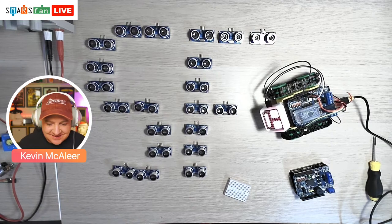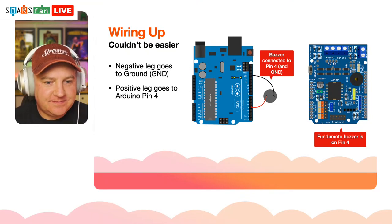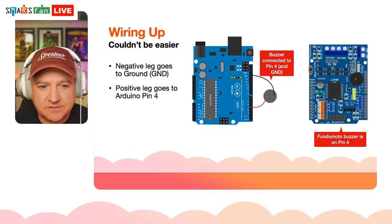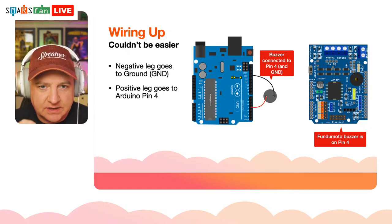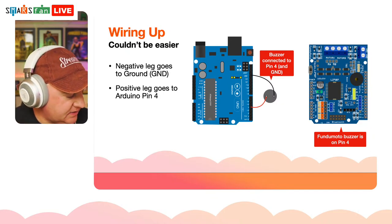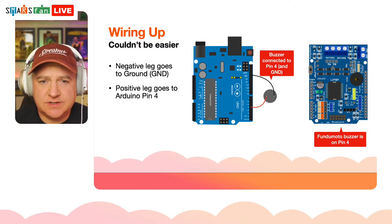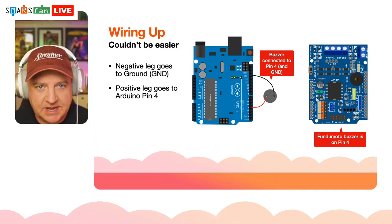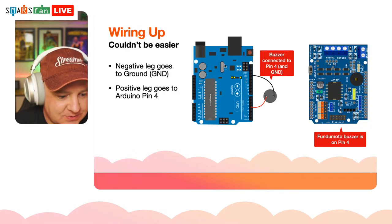Like I said, it couldn't be easier — pin 4. You can actually use any pin, but if you're doing more sophisticated stuff you may need the PWM pins, which are the ones with the little squiggle on the Arduino next to them — pins 3, 5, 6, 9, 10, and 11. Those are specifically set up for pulse width modulation, but we're not worrying about that today.